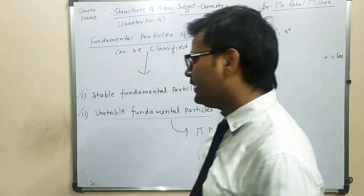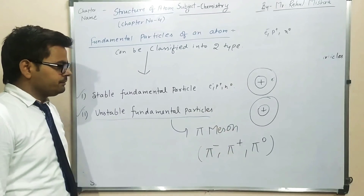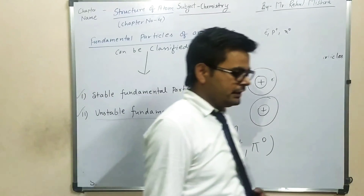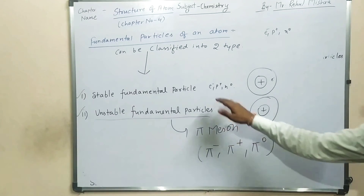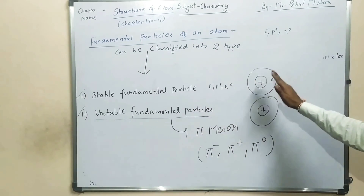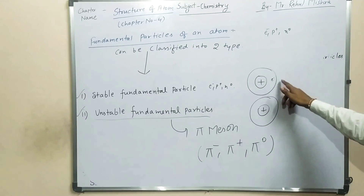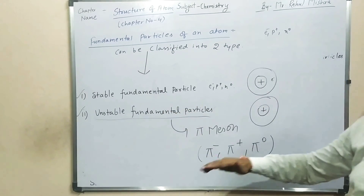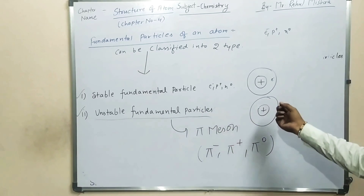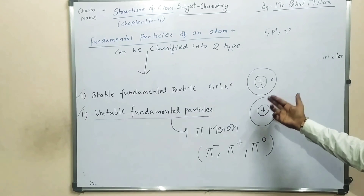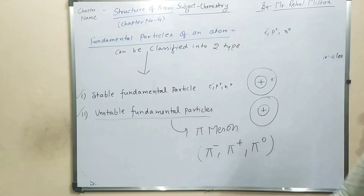So atom has two types of fundamental particles. First one is stable fundamental particles — they are electron, proton and neutron. And second is unstable fundamental particles — they are π meson: π minus, π plus and π zero. तो stable fundamental particles वो होते हैं जो nucleus के बाहर long time के लिए exist कर सकते हैं. But unstable means वो किसी क्षण के लिए रुकेंगे, ज्यादा देर के लिए वो exist नहीं कर सकते — then those fundamental particles are unstable fundamental particles.